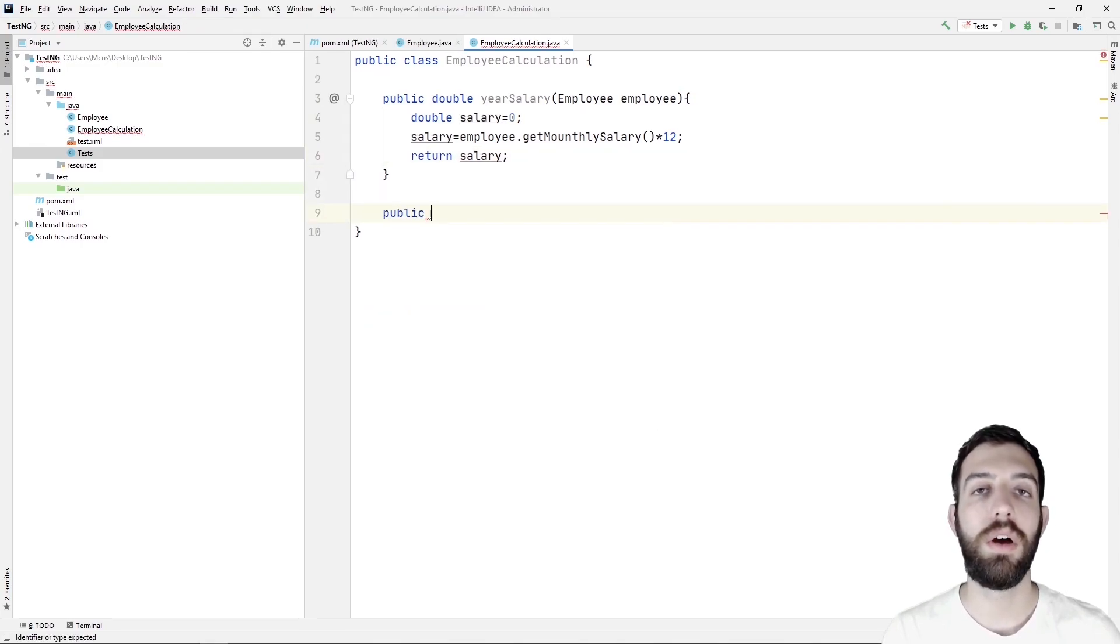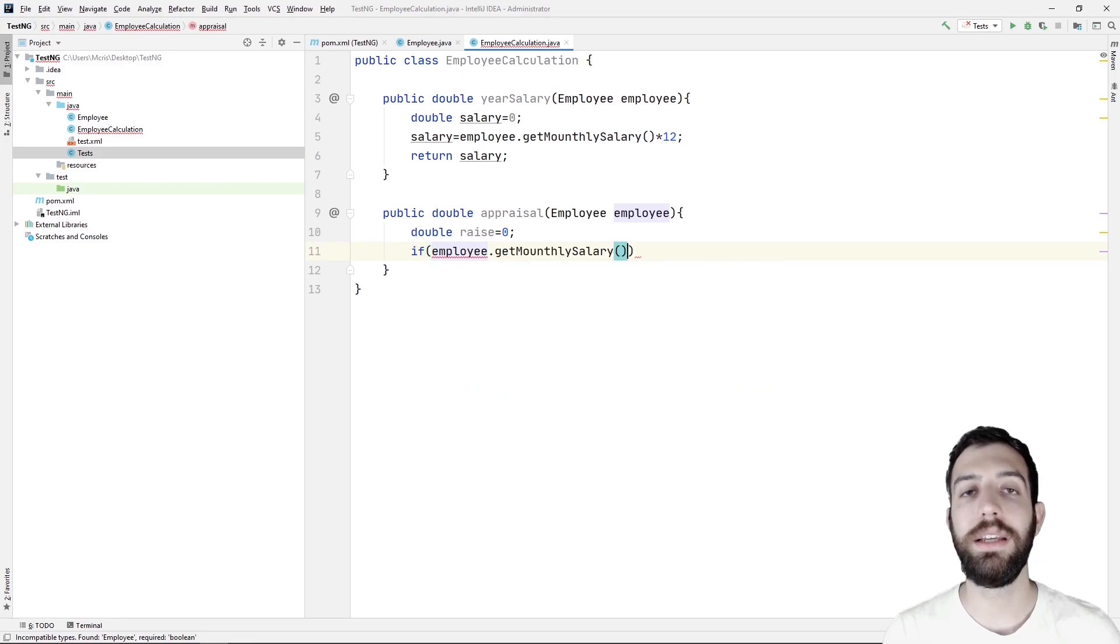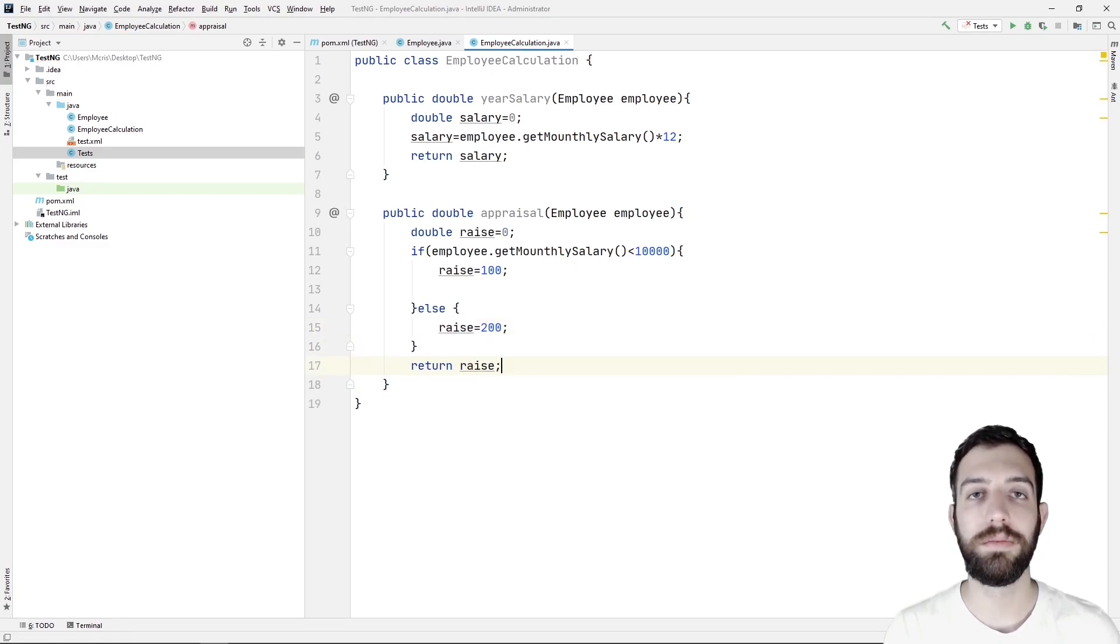Secondly, we create a new method with a name appraisal, which has again one parameter, which is the employee. Inside the method, we determine the appraisal amount of the salary of the employee. If the monthly salary is smaller than 10,000, then we raise the salary of the employee by 100, or else we raise the salary of the employee by 200 and we return the rise.